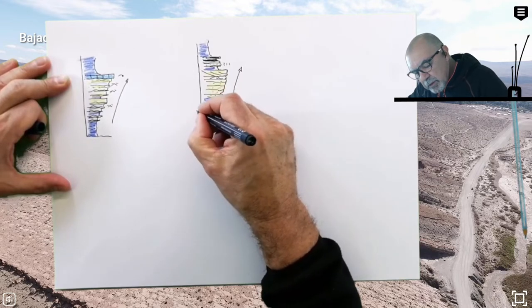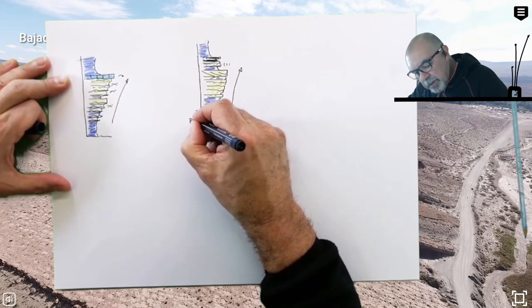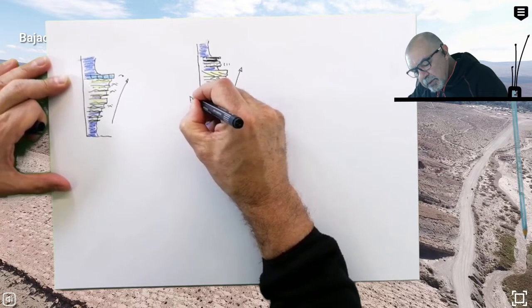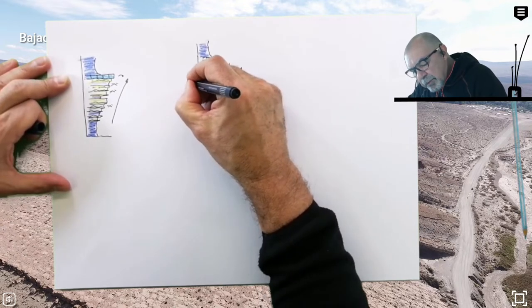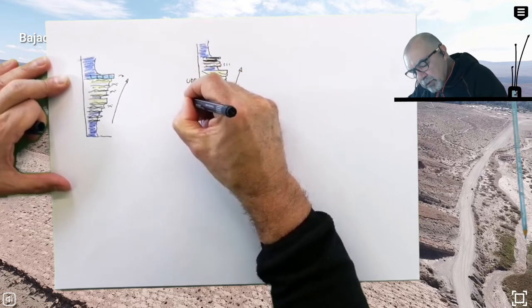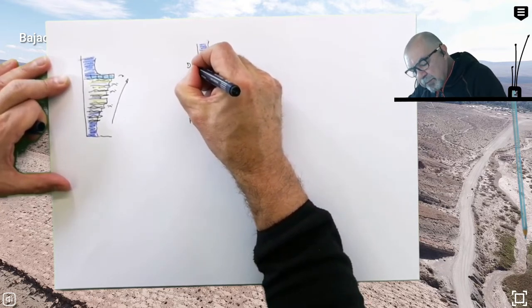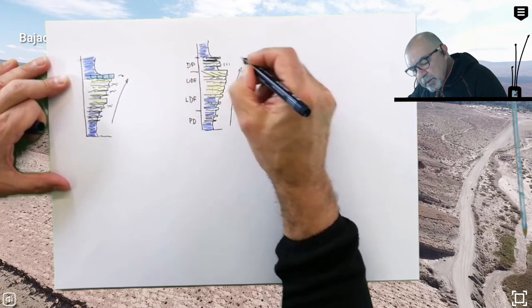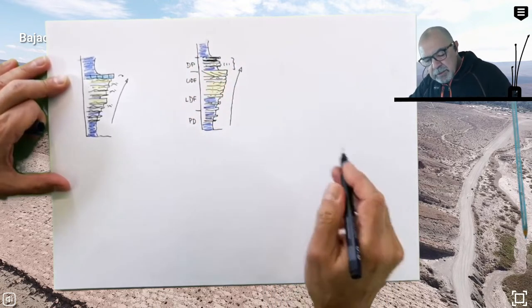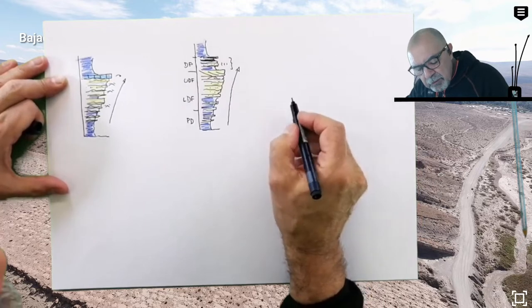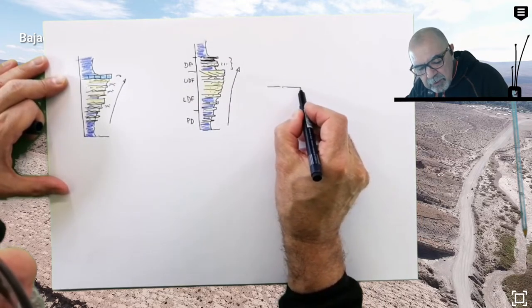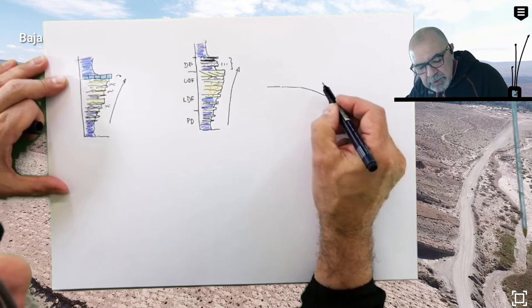But the main difference is in this section you can see a progradation, probably from pro-delta, delta front, upper delta front or lower delta front, upper shoreface, then we have delta plane. Delta plane is the result of the progradation of a typical delta system.